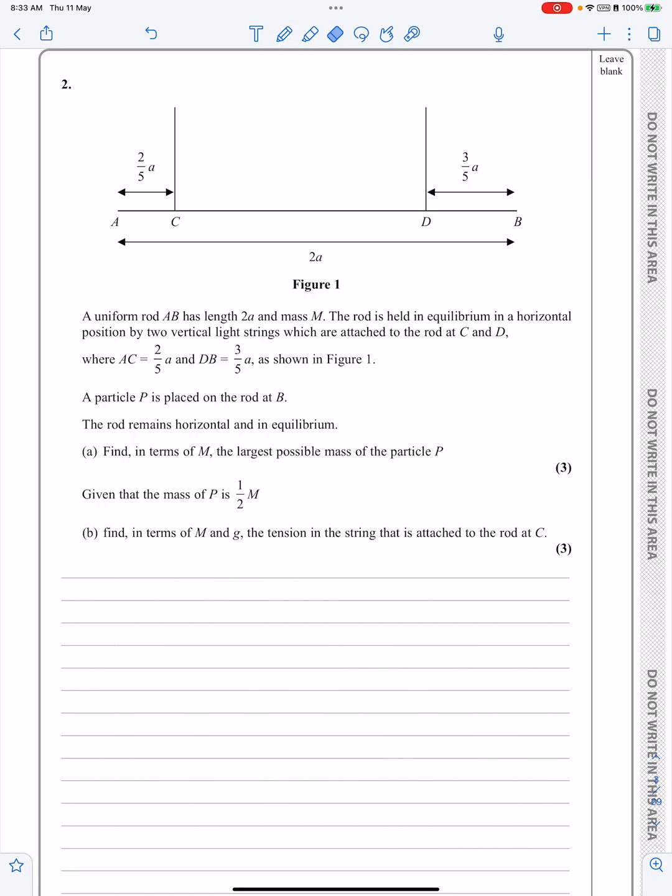Let me draw the diagram out while you're reading through the question here. We've basically got a rod A, B. And we've got a string acting here. Sort of a tension there. We've got a string acting here. So we've got a tension there.